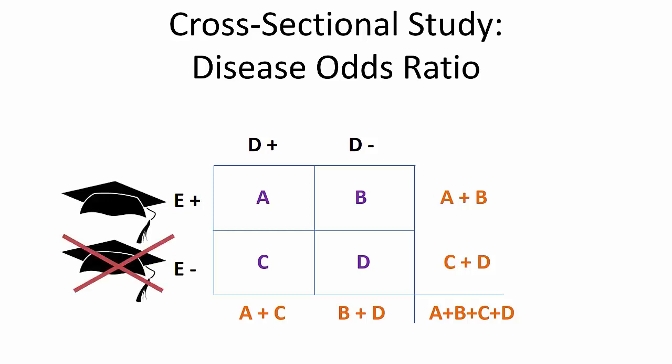Our binary exposure is having a college degree, yes or no. Our binary disease or outcome will be having an injury, yes or no. Let's say this is a cross-sectional study.